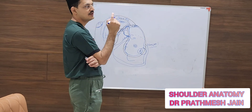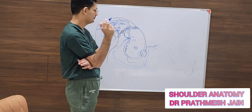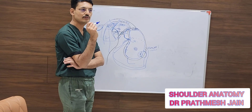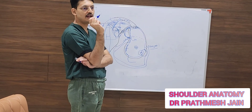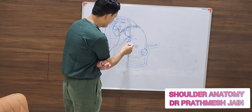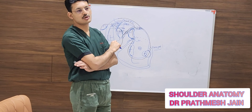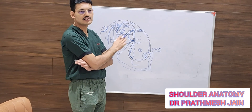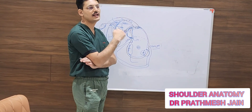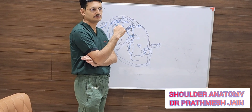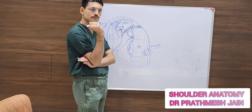The GLAD lesion stands for Glenoid Labral Articular Defect — on the face of the glenoid, along with labral damage, there is also articular cartilage loss. Cartilage loss along with labral loss is called a GLAD lesion.